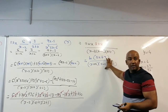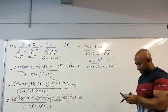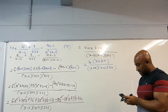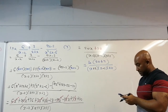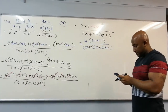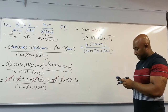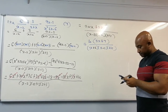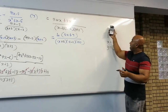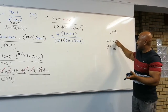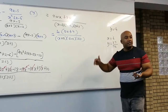Now let me type out the simplified answer: 4 times 5x plus 7, divided by x plus 2, x minus 2, x plus 3. When I substitute x equals 1, I get minus 4. When I substitute x equals 6, I get 37. There is no mistake — this is the correct answer.